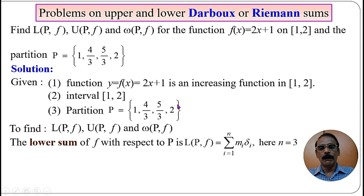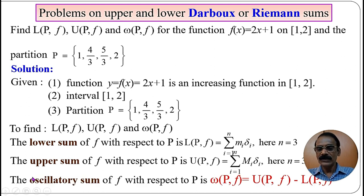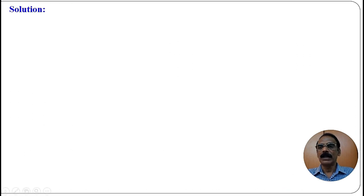Here n = 3 because we have 4 partition points giving 3 sub-intervals. The upper Riemann sum is U(P, f) = Σ(i=1 to n) Mᵢ · δᵢ where n = 3. The oscillatory sum is defined as ω(P, f) = U(P, f) − L(P, f).